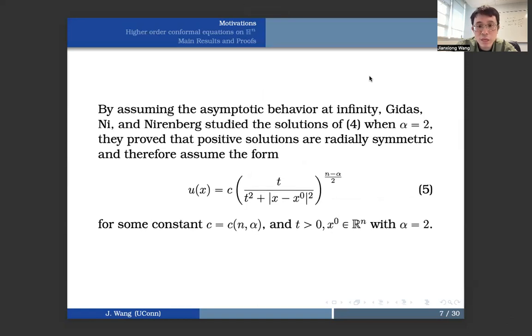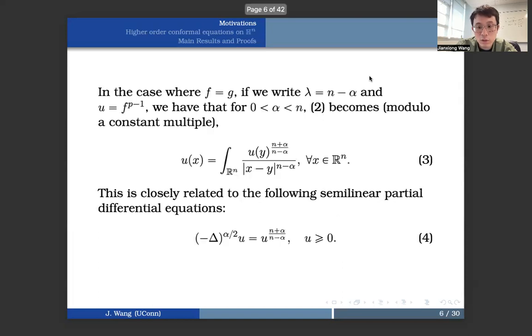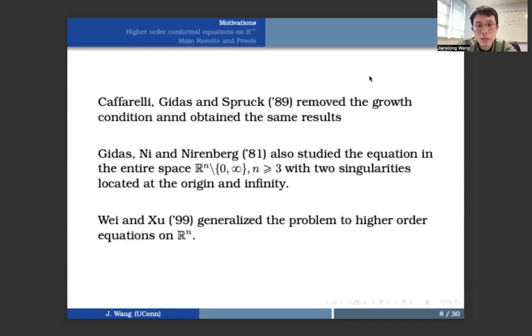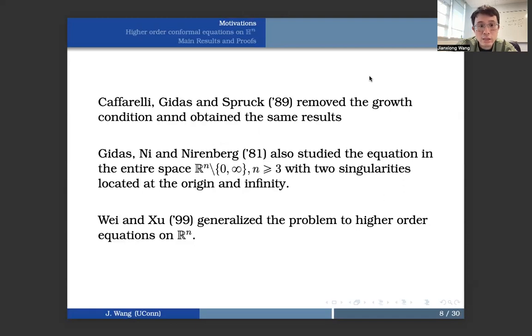And by assuming the asymptotic behavior at infinity, Gidas-Nirenberg studied the solution of this semi-linear PDE when alpha equal to 2, and they proved that the positive solutions are always radially symmetric, and therefore assume the following form for some constant c depending on the dimension and alpha equal to 2 for some t positive, and x0 is a point in Rn. Later, it took about a decade for Caffarelli and Gidas and Spruck to remove the growth conditions and obtain the same results.